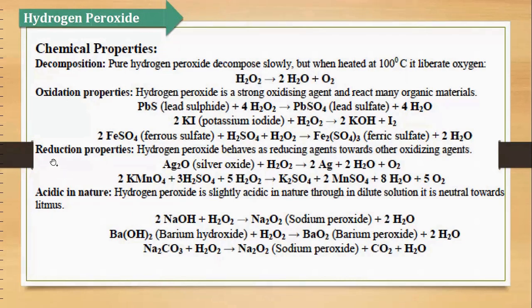The third property is reduction. Hydrogen peroxide oxidizing agent to hai, lekin kai baar yeh reducing agent ka bhi kaam karta hai. For example, humne silver oxide liya, silver oxide mein se humne hydrogen peroxide pass ki. Hydrogen peroxide jab iske saath react karegi to silver metal alag se free ho jayega plus water and oxygen. Then KMnO₄ ke saath jab hydrogen peroxide ko react karwate hain in the presence of sulfuric acid, hamare paas aayega potassium sulfate, manganese sulfate, water and oxygen. Yahan par KMnO₄ bhi oxidizing agent hai, hydrogen peroxide bhi oxidizing agent hai — to yahan oxidizing agent ka naam yeh karega, yeh reducing agent ka kaam karega. Jab koi aur oxidizing agent present ho to yeh reducing agent ban jata hai.